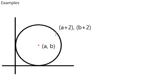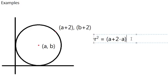How do we find this? Well, again, you'll remember that Pythagoras thing. R squared is equal to - we know - A plus 2 minus A because it's this coordinate minus this coordinate, plus B plus 2 minus B.